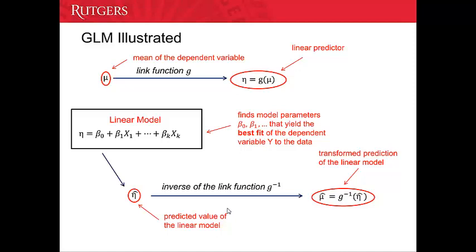Why do we call it the linear predictor? Because we will use it in the linear model. We call the transforming function the link function, and we use g to denote it.